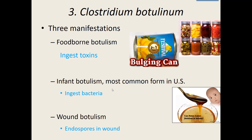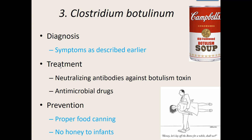Either way, we don't want your skeletal muscles to stop contracting. Diagnosing involves looking for the symptoms — blurry vision, dilated pupils, constipation, and possibly difficulty breathing if the diaphragm isn't working correctly. Treatment involves giving you antibodies to try to bind up or neutralize the botulism toxin, and antibiotics to try to kill any bacteria in your body.